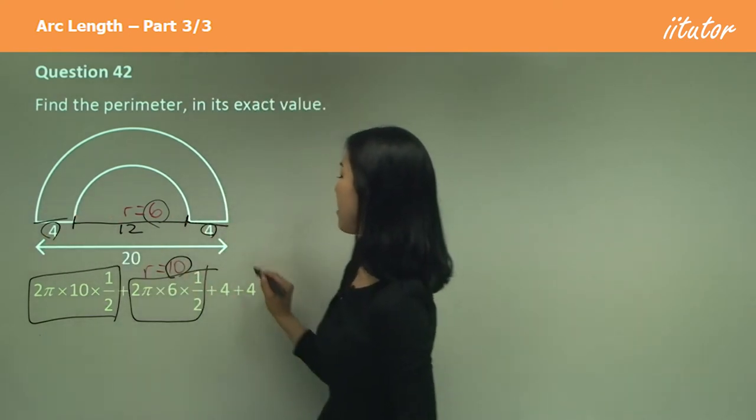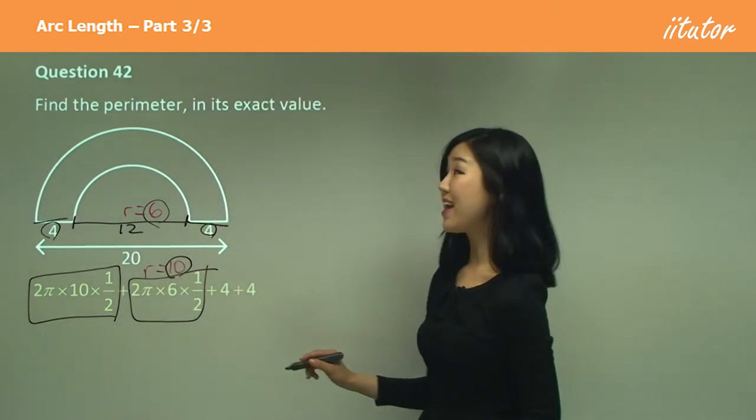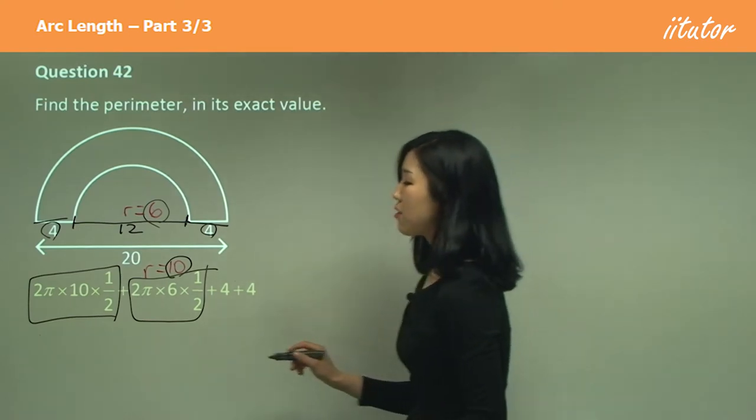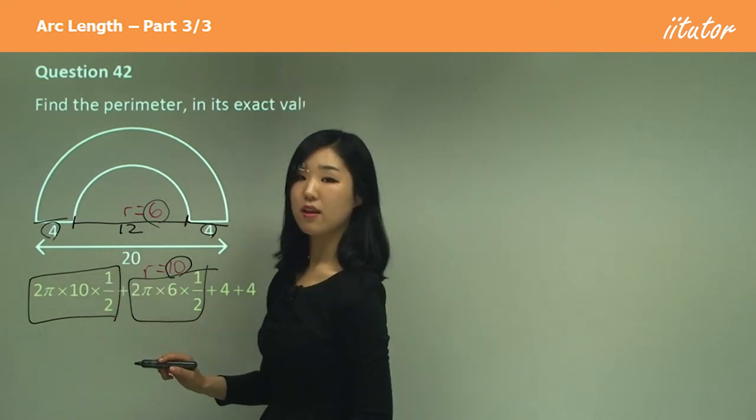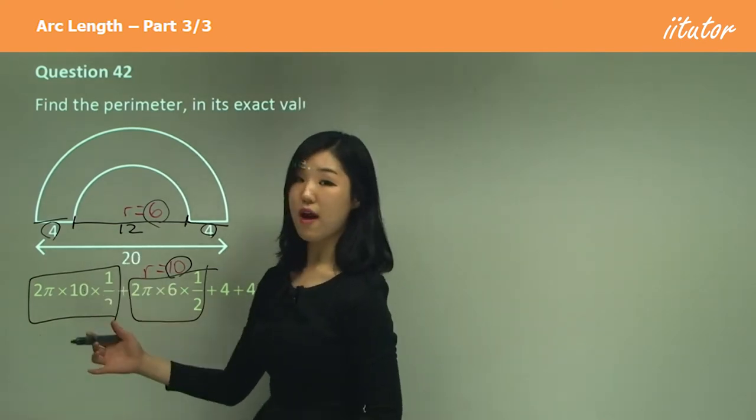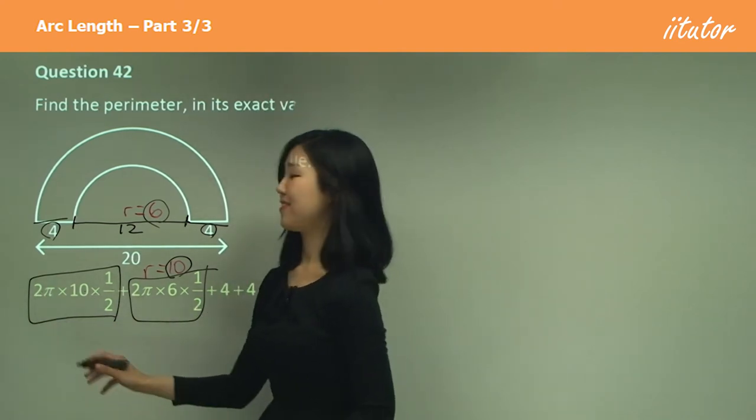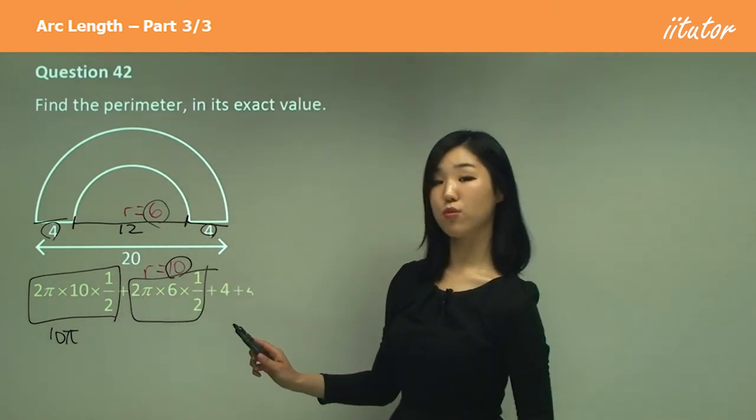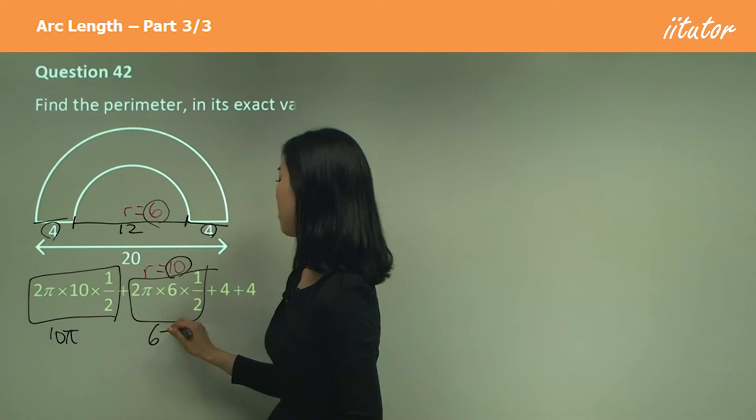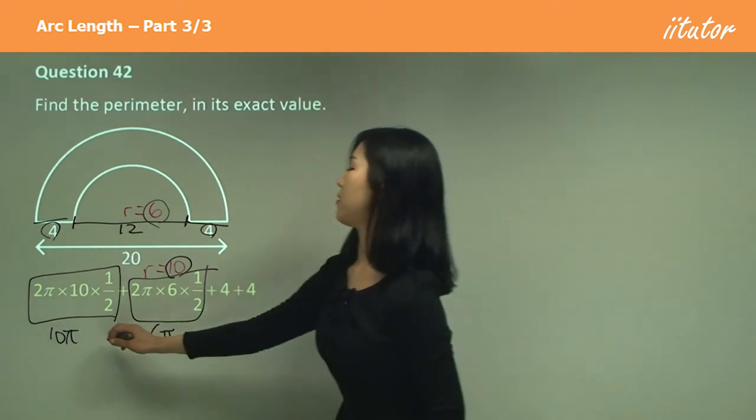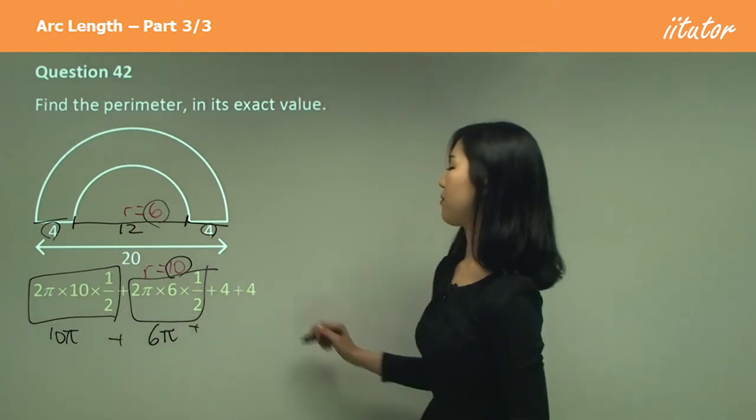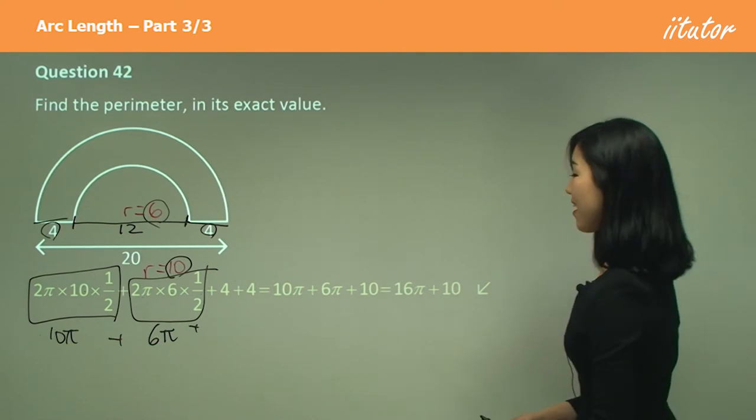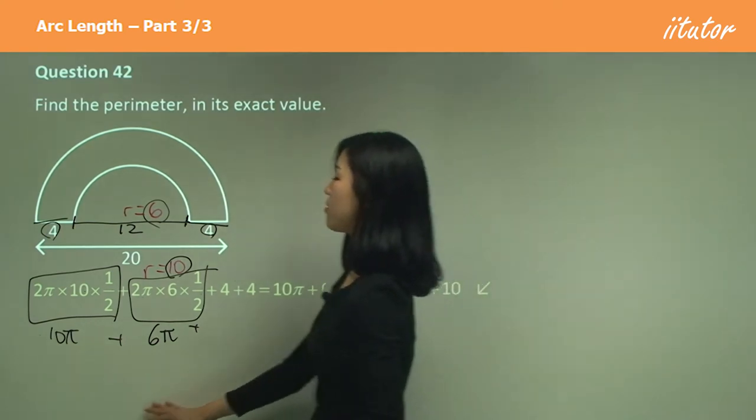Okay, now guys simplify that because we need to put it in exact value, so simplify individually. So this one here, what's half times 10? Half times 10 is 5, and 5 times 2 is 10, so we've got 10π there. And see here, 6 times a half is 3, 3 times 2 is 6, so we have 6π there. So we've got 10π plus 6π plus 4 plus 4, which gives you that, as I said, which is 16π plus 10. Okay, and that's the answer, leave it like that because they want you to put it in exact form.